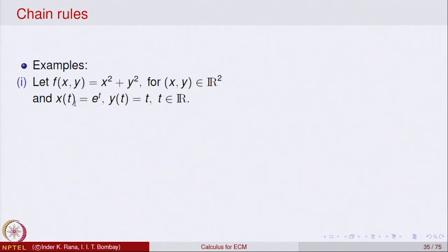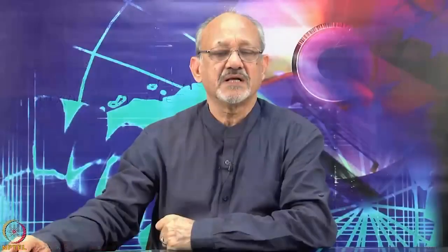So x is a function of t and f is a function of x and y, and y is also a function of t. If we substitute the values of x into the formula, we get x² = e^(2t) plus t², so f actually becomes a function of one variable. However, we want to illustrate this as an example of chain rule.